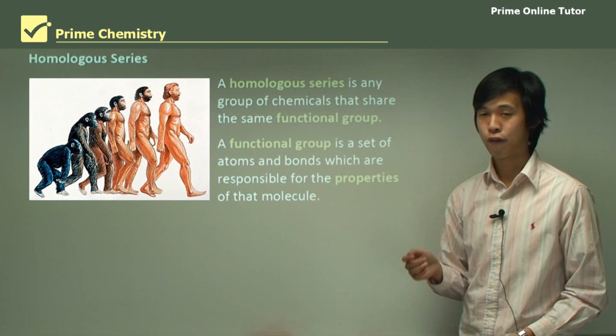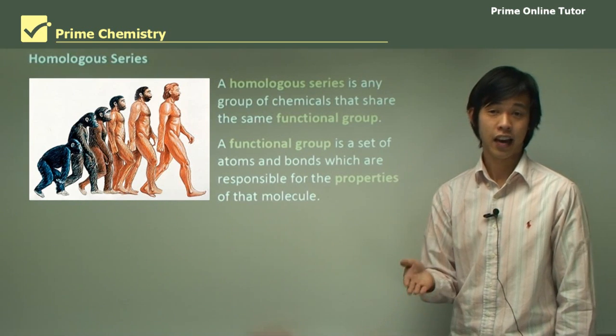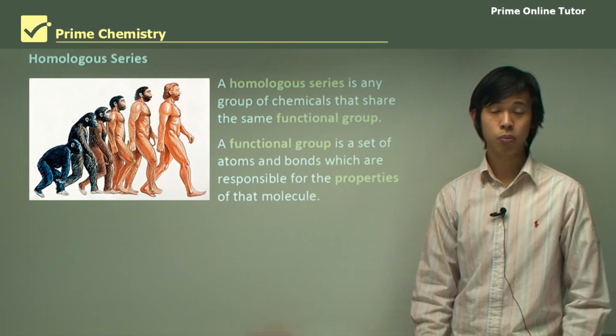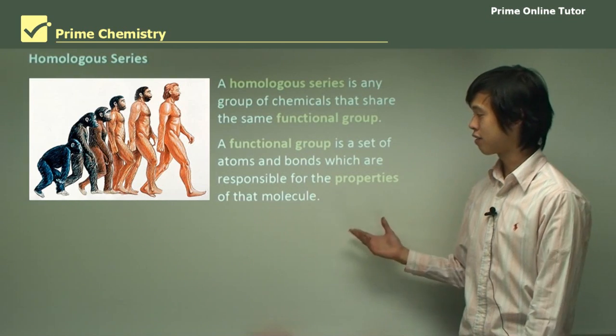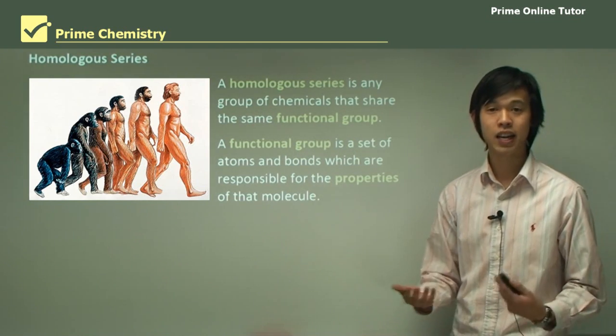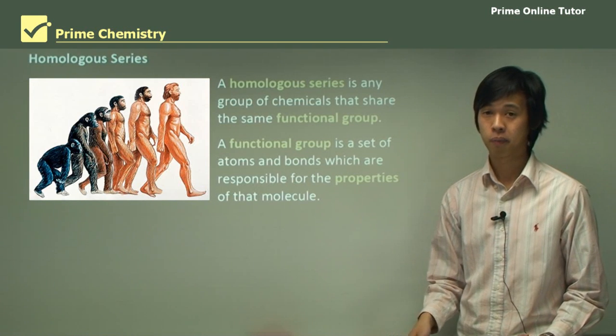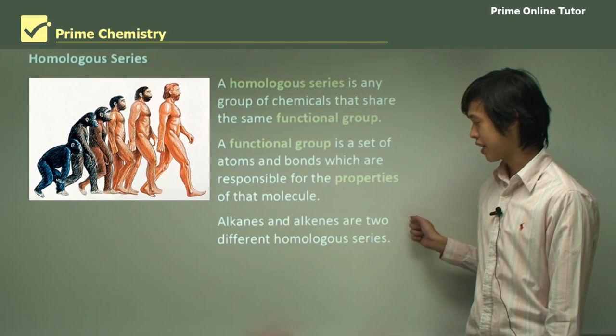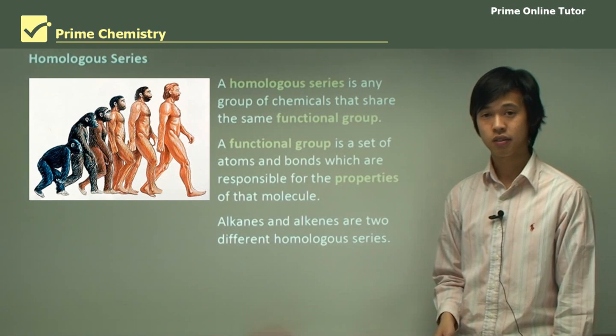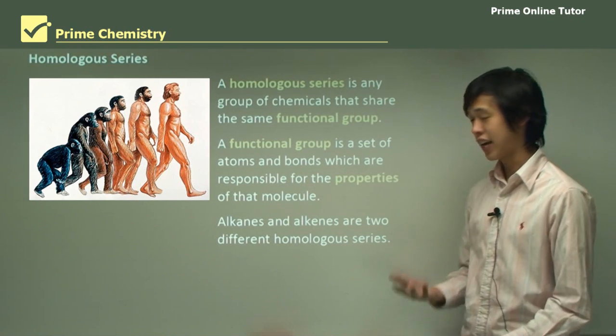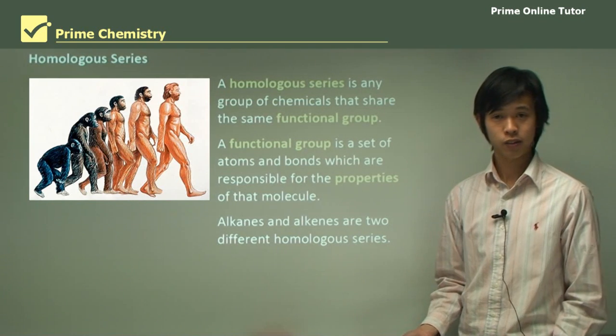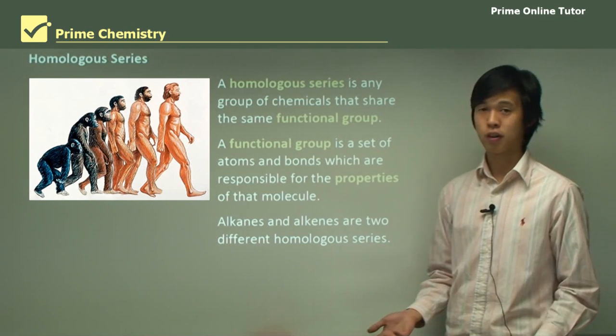A functional group could be a double bond like in the alkenes. It could be a hydroxyl group like in alcohols. It could be a triple bond like in alkynes. Functional groups are anything that make it different from the alkane group. Alkanes and alkenes are two different homologous series because alkanes have no functional groups and alkenes have the double bond functional group.